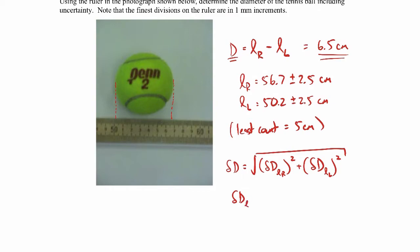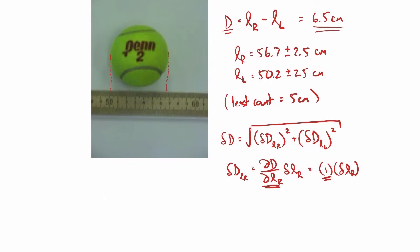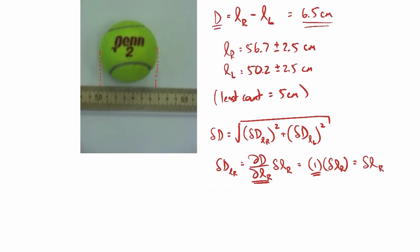That'll be the derivative of the diameter with respect to L sub R, multiplied by the absolute uncertainty in L sub R. If you take that derivative, it's just 1. So this uncertainty will just be the absolute uncertainty in L sub R, which is 2.5 centimeters.